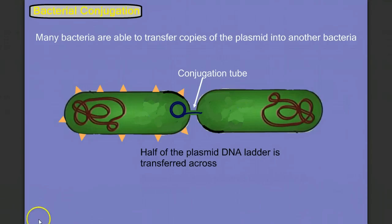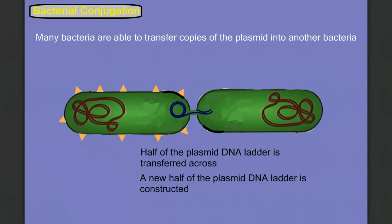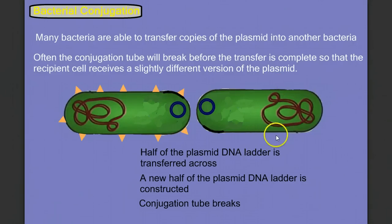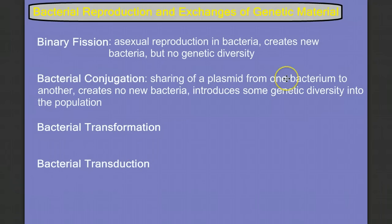Half the DNA plasmid strand is transferred across, and as it comes across on the new side, we build the other side of the double strand. At some point this conjugation tube is going to break and end our transfer, and it's not uncommon for the tube to break before the entire plasmid has been transferred, giving a slightly different variation of the plasmid. Notice that bacterial conjugation did not create any new bacterial cells — it's not reproduction, but it does introduce genetic variation into our bacterial population.